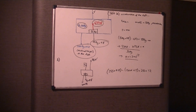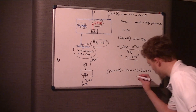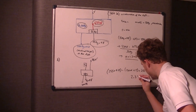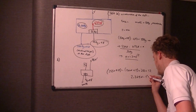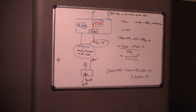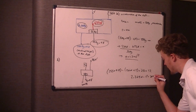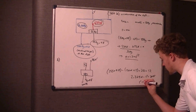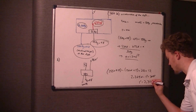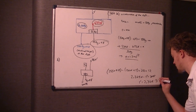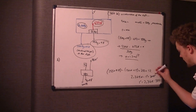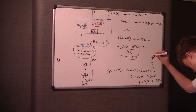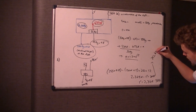That simplifies: 2,349 newtons take T is equal to 255 times 1.2, which gives 306. So therefore T is equal to 2,349 newtons take 306 newtons — T equals 2,043 newtons.